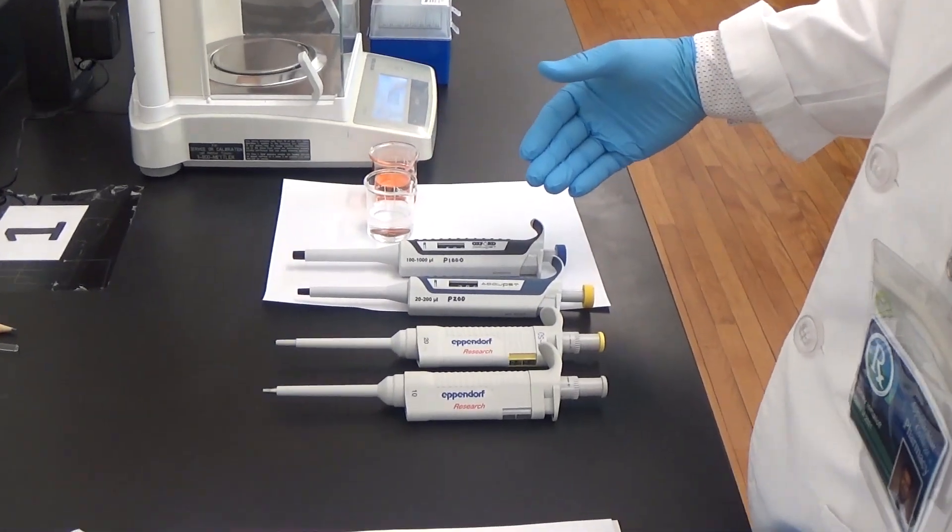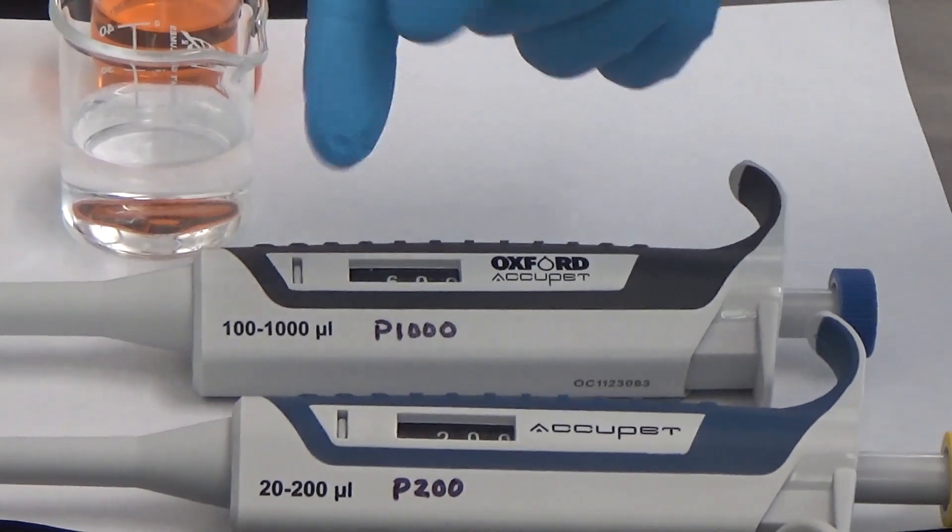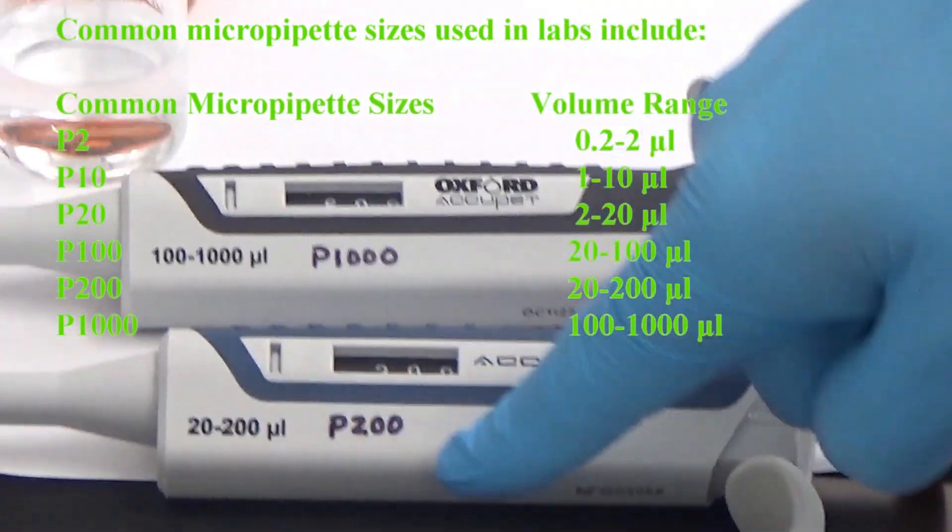Look at the front face of the pipette to see the minimum and maximum operating range. There are different sizes of micropipettes and they are named by the maximum volume they can measure.